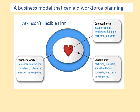Another aspect of workforce planning can be shown using Atkinson's Flexible Firm model, which we've touched on in previous weeks. Atkinson's Flexible Firm is designed to improve agility or flexibility amongst organisations and comprises the core workforce, variable staff, and peripheral workers. In addition to improving overall skills, it's important for organisations to be as flexible as possible, given the rate of change in the external environment.